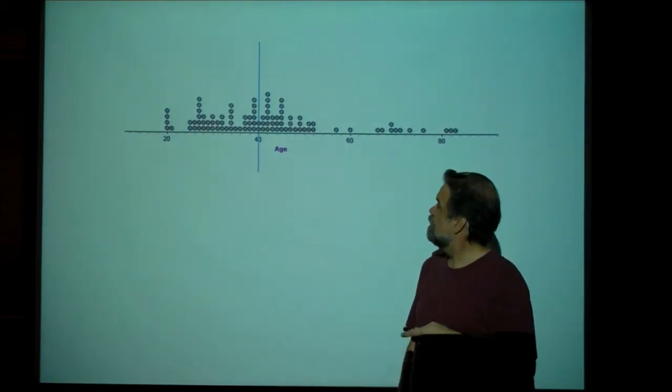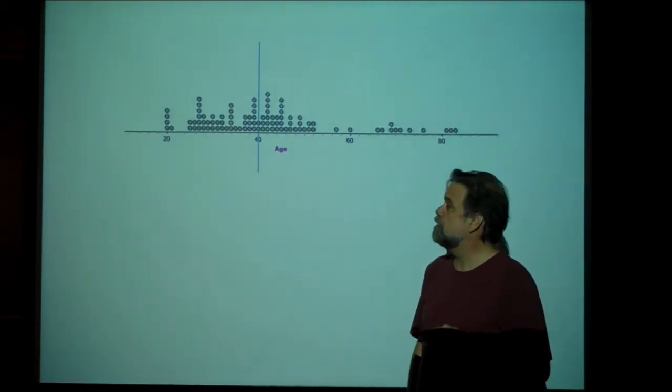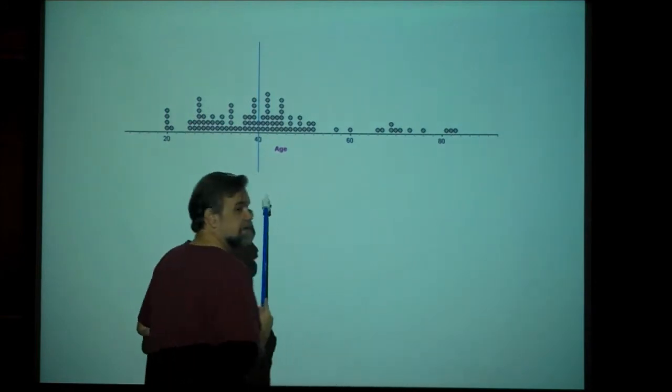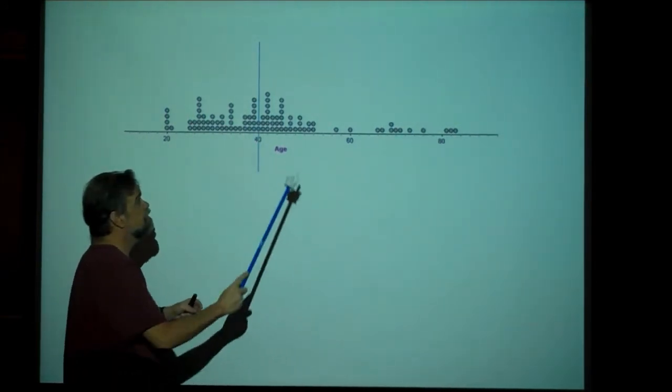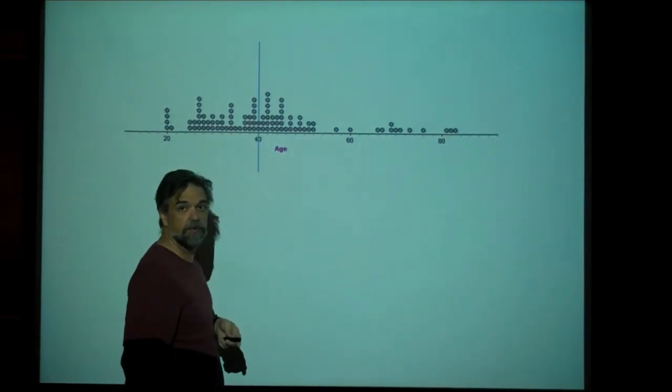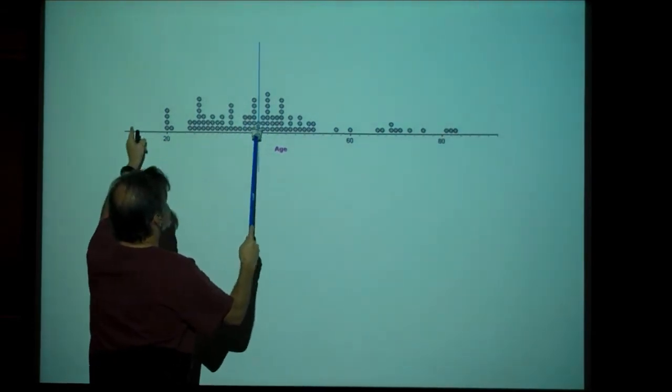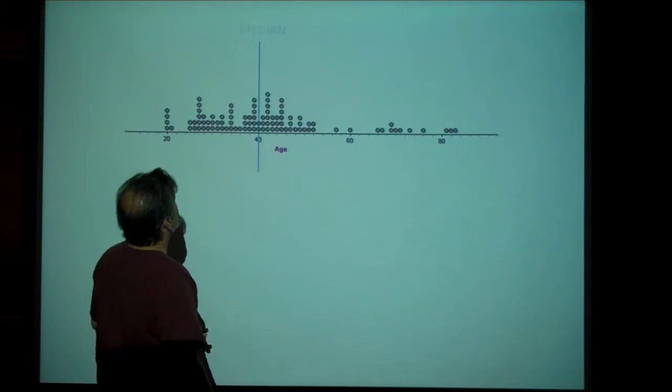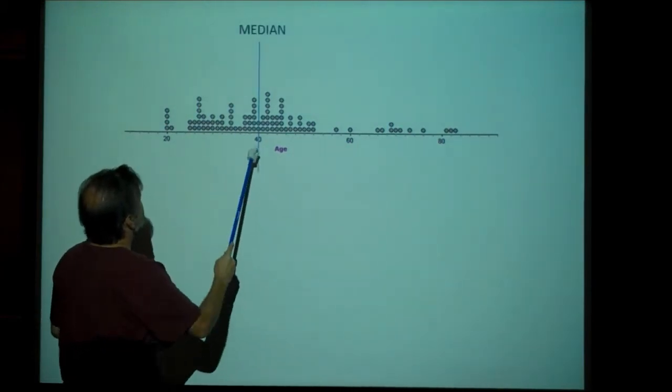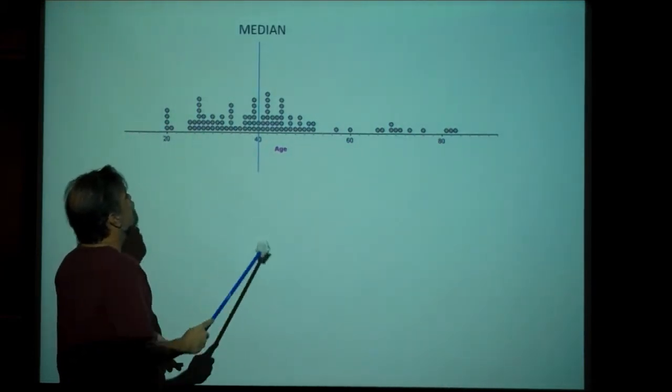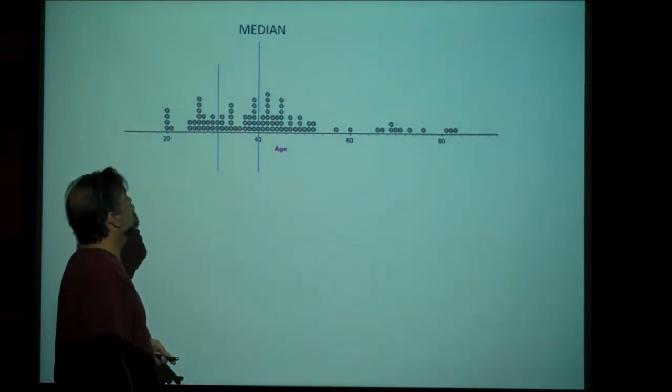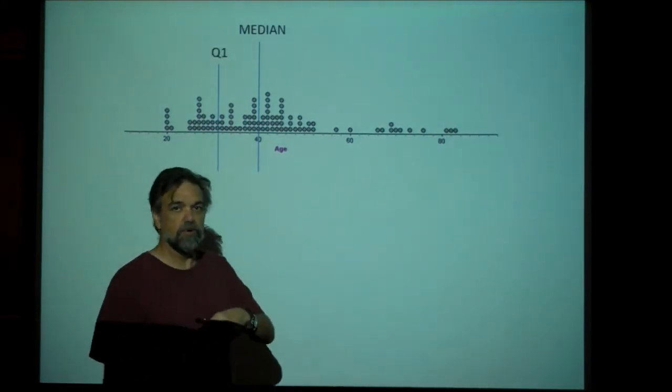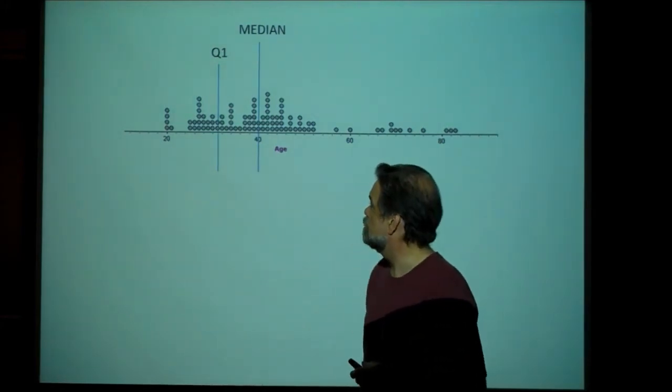We're also interested in other particular points, particular measurements. One is the median of the left side of the data. So basically what we're going to do is we're going to ignore the upper 50% of our data and just look at the lower 50% of our data. There's our median. And when we take the median of this half, there it is, we call that Q1 or the lower quartile or the first quartile of our data.